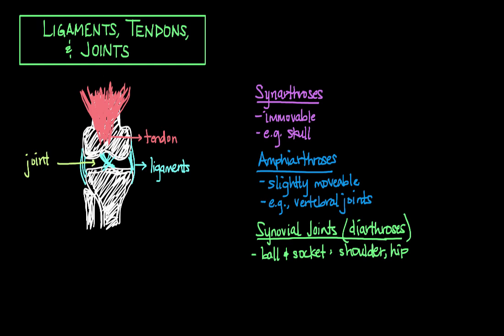Another type of synovial joint is the hinge joint. An example of a hinge joint would be your elbow or your knee, where that joint pretty much moves in just one plane, like the hinge of a door.